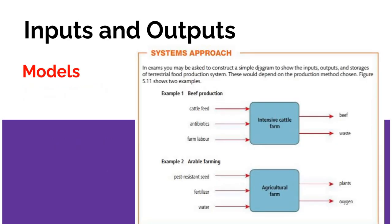Going back to what we talked about in Unit 1 — how would we model a system? Inputs, storage, and outputs, with arrows indicating flows. If we were talking about beef production and a cattle farm, you'd put in things like food for the cattle, antibiotics, and labor — inputs don't all have to be physical things. You're going to get out beef and waste, and your storage would be the cattle themselves.